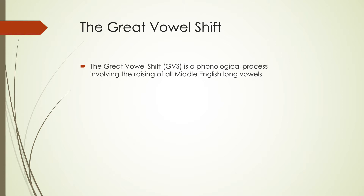Things from Middle English like open syllable lengthening and closed syllable shortening led to which words were in an environment to change, since this only affected the long vowels. Words that ended up lengthening their vowels in Middle English would have undergone this system, while those that shortened would not. For example, 'seka' for 'sick' underwent shortening and was not involved in the Great Vowel Shift, but 'seek' did undergo the vowel shift change.